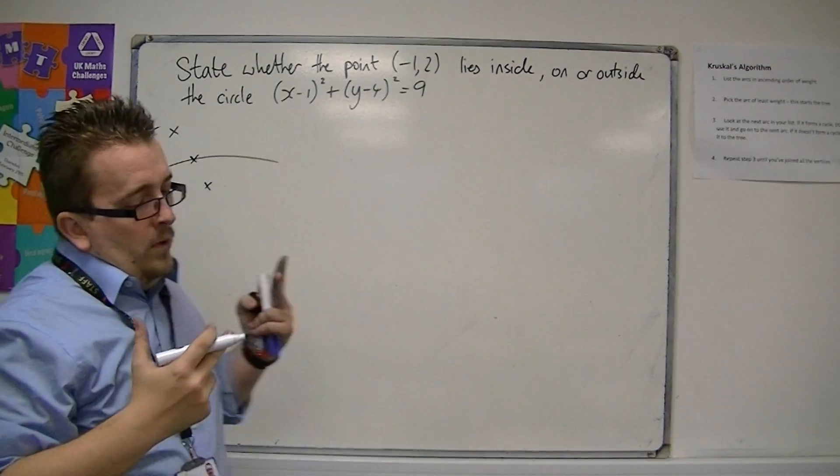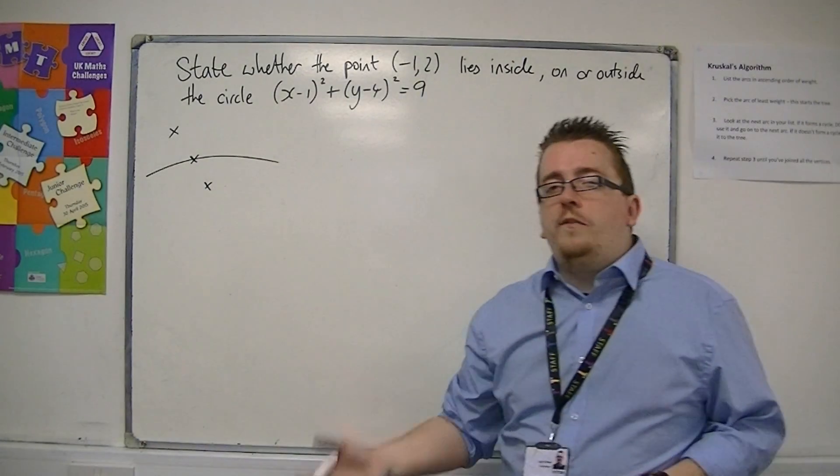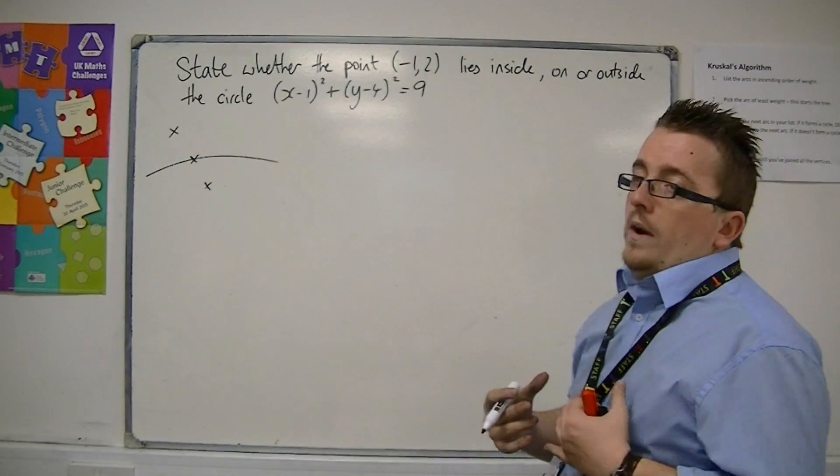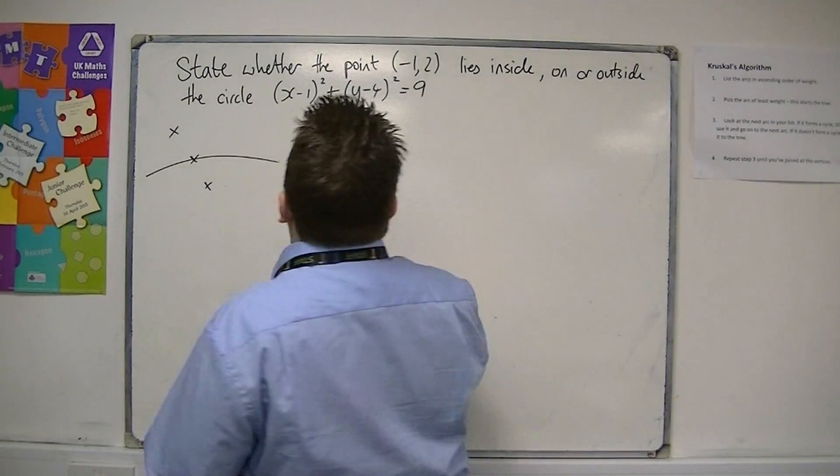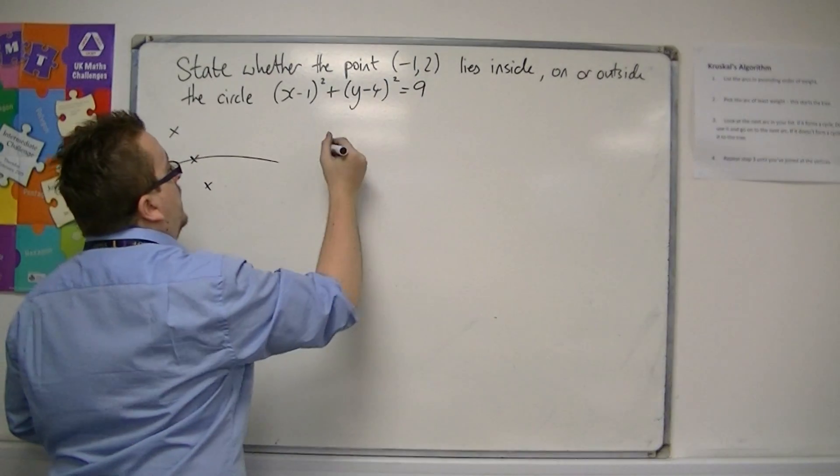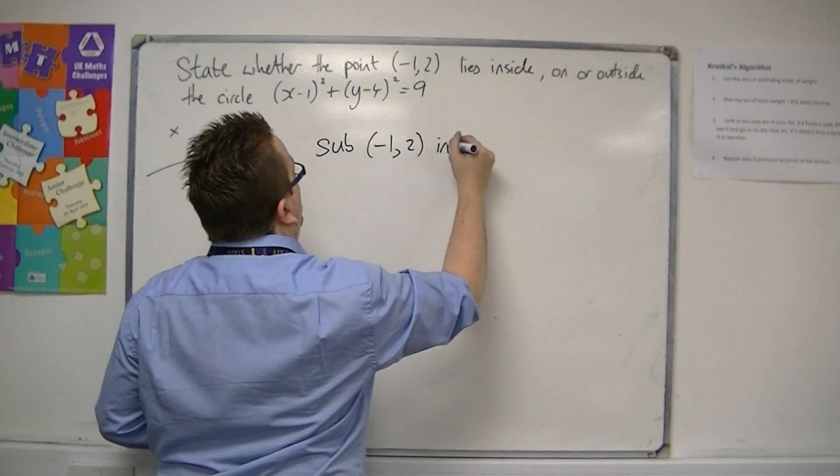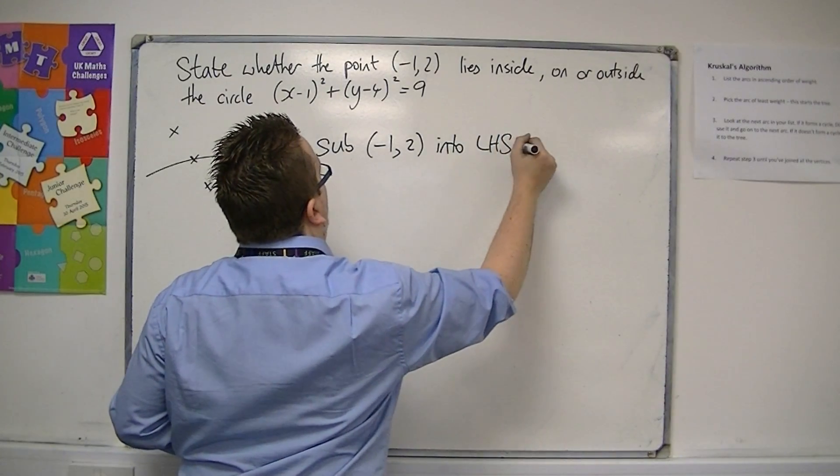There are a few different ways of doing this, but one of the nicer ways is just to substitute (-1, 2) into the left-hand side of the equation.